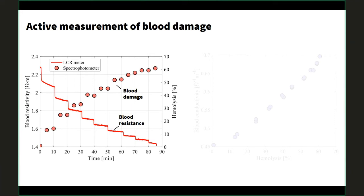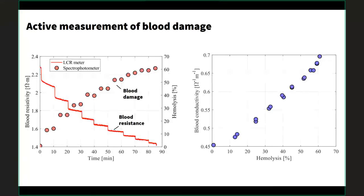We also plotted spectrophotometer readings on the right vertical axis, which give a direct measure of hemolysis percentage — the percent of blood that's damaged. We see the expected inverse correlation: as we added more damaged blood, the hemolysis percentage increased in a step-like manner. Combining these behaviors on the right plot — blood conductivity versus hemolysis — we see the correlation we were looking for: blood conductivity is directly and primarily linearly correlated to hemolysis percentage. We could reliably detect hemolysis down to one or two percent in real time with just a conductivity meter.